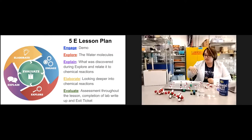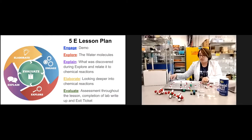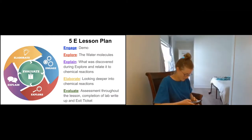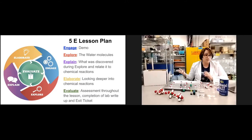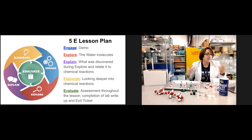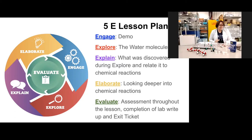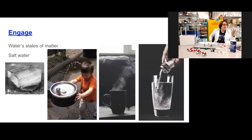Then the kids take time to explore with the model itself. You would give each group one of these containers and then a tray — I definitely recommend one with lips on the side, and the STEM lab has plenty of them. After that, the students explain what they discovered and why, relating it to chemical reactions. Finally, the fifth E is to evaluate and complete the elaboration.